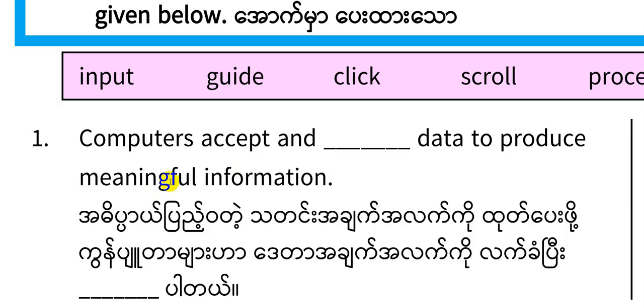The word 'meaningful' is an adjective. 'Information' is a noun. These are the key words to help identify the correct verb form needed.